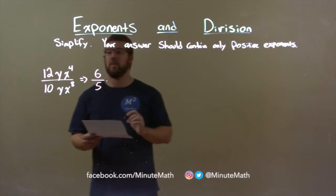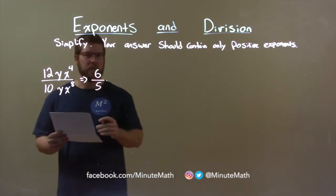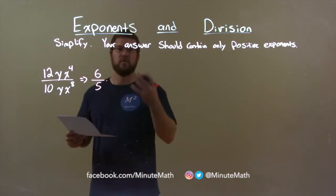Now, let's look at the variable y. We have y divided by y, and any number divided by itself is 1. Y divided by y becomes 1, and multiplying by 1 doesn't really do anything. It's what we call the multiplicative identity.